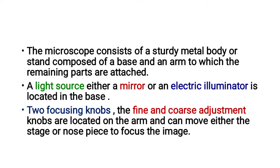A light source — either a mirror or an electric illuminator — is located at the base. Two focusing knobs, the fine and coarse adjustment knobs, are located on the arm and can move either the stage or nose piece to focus the image.